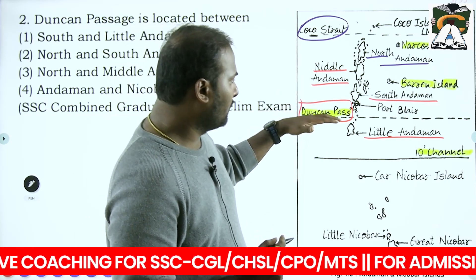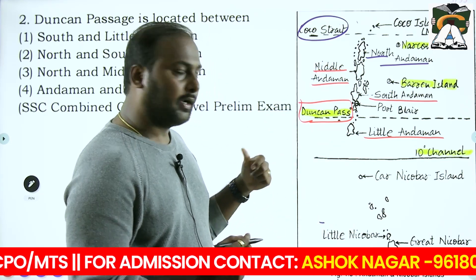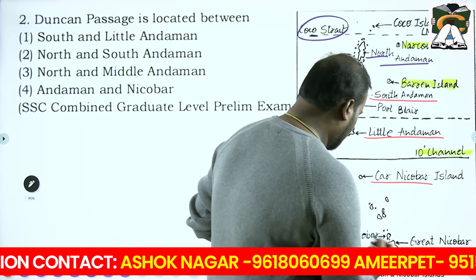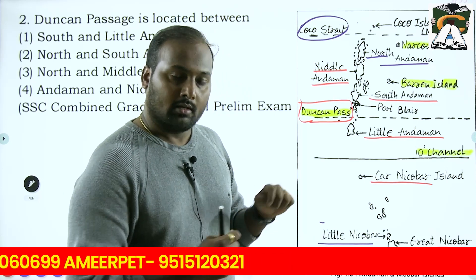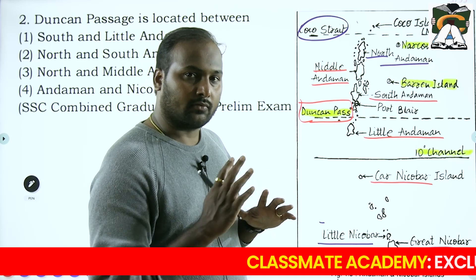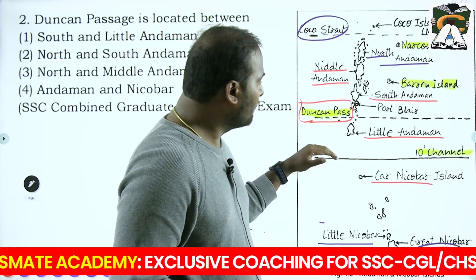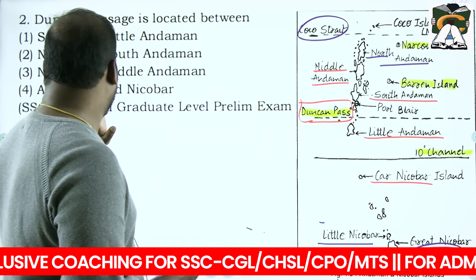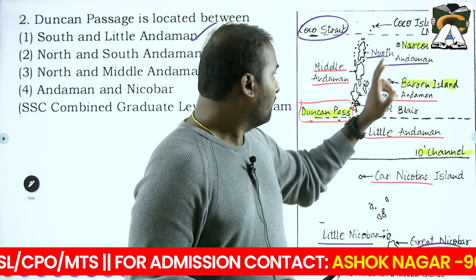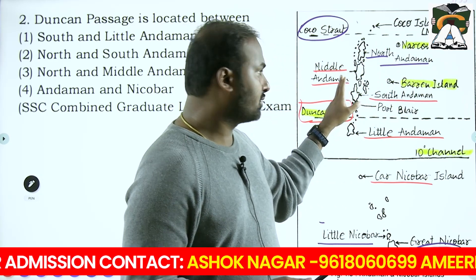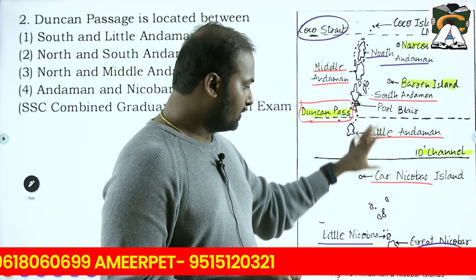The answer to Duncan Pass is between South Andaman and Little Andaman. Regarding Nicobar Islands: the division is Car Nicobar, Little Nicobar and Great Nicobar. In Great Nicobar, you can see the southernmost tip of India which is at around 6 degrees 4 minutes latitude - that is your Indira Point, which is also very important. Also remember Narcondam Island close to North Andaman, Barren Island close to Middle Andaman, and Port Blair is present in South Andaman.